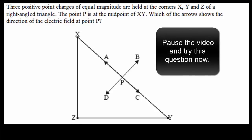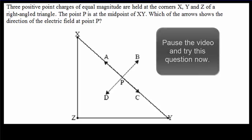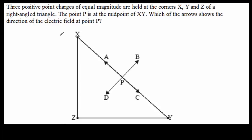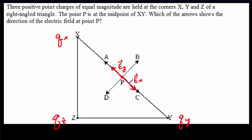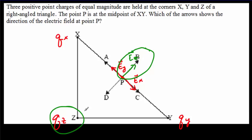Try this IB multiple choice question: pause the video, try it, then come back. We have three positive charges QX, QZ, and QY — all the same size and all positive, so they all push away. Placing a positive test charge at the point, QX pushes one way (EX) and QY pushes the opposite way (EY). EX and EY are equal and opposite, so they cancel. The only contribution is from QZ, which pushes the test charge away in its direction. EZ equals the resultant, so the correct answer is B — the field points directly away from the charge at Z.